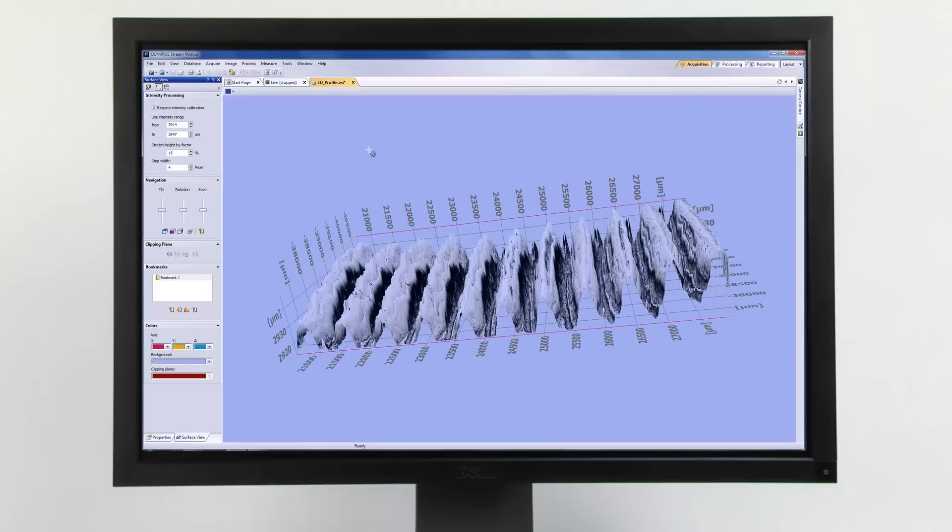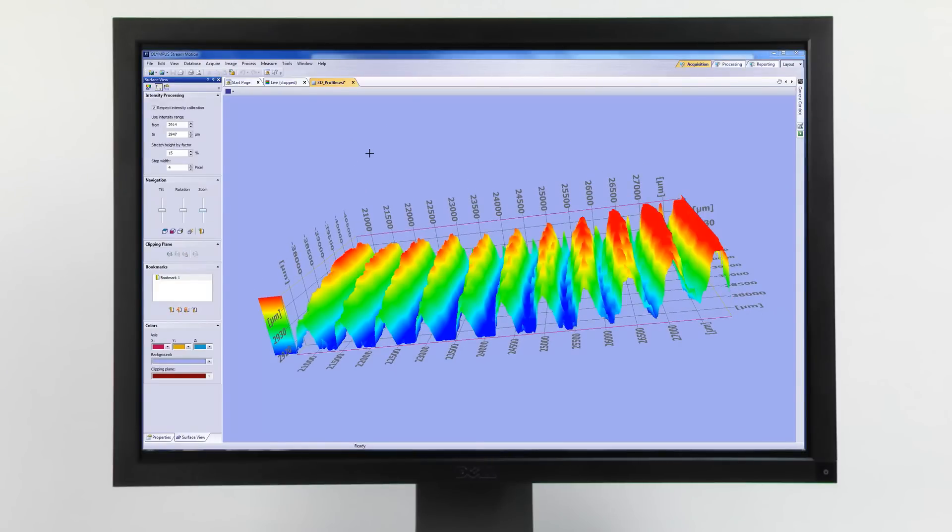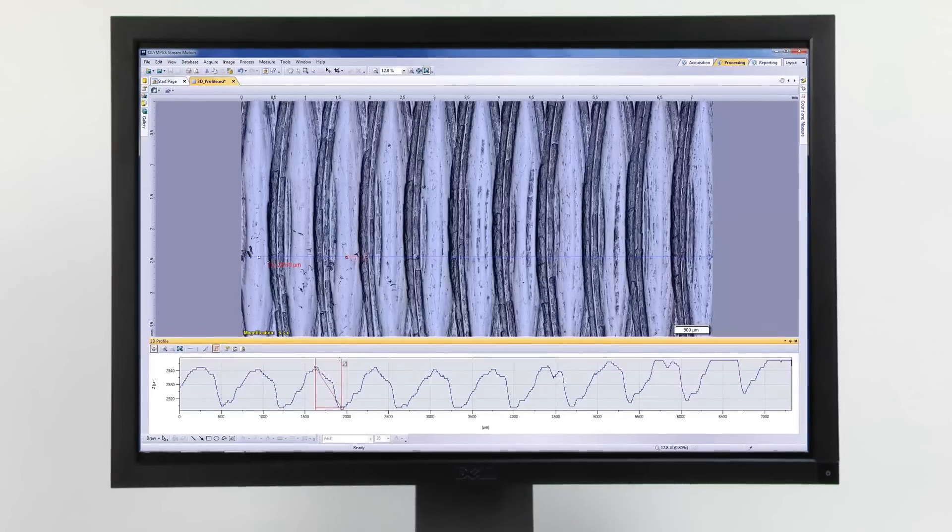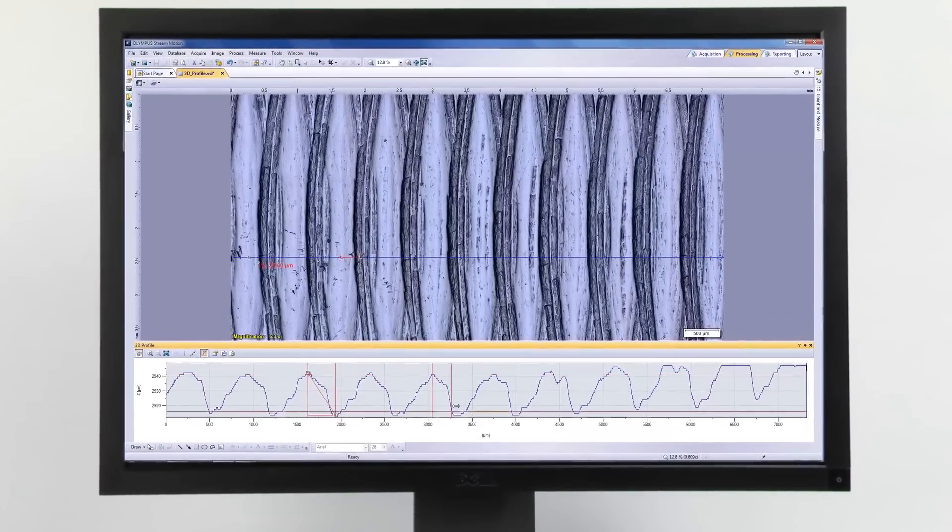This acquisition can be viewed as a 3D image at various angles and as a color map. When using a Z encoder, measurements can be performed on the profile.